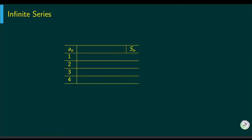We look at the partial sums S_N. The first term S1 is just 1. Then S2 is 1 plus 2. The third term is 1 plus 2 plus 3. The fourth term is the sum of the first four terms. These sums also construct a series — not a sequence — called the sequence of partial sums.